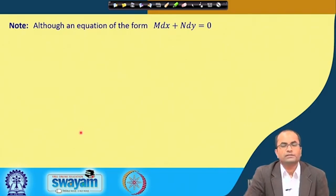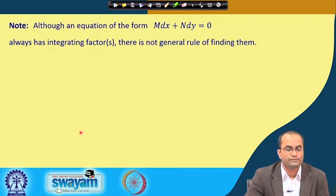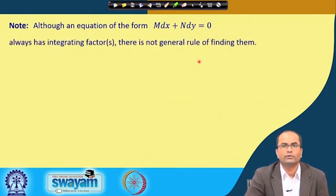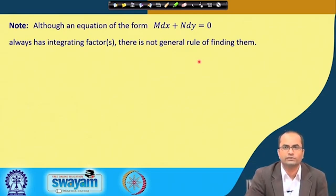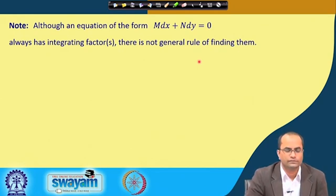Although an equation of the form M dx plus N dy always has an integrating factor — or possibly multiple integrating factors — there is no general rule for finding them. It is a somewhat tedious job to find the integrating factor in general. So we will consider only some special cases where we can find the integrating factor easily.